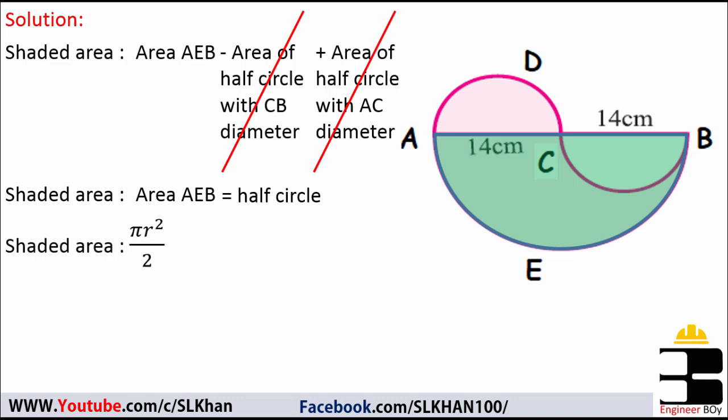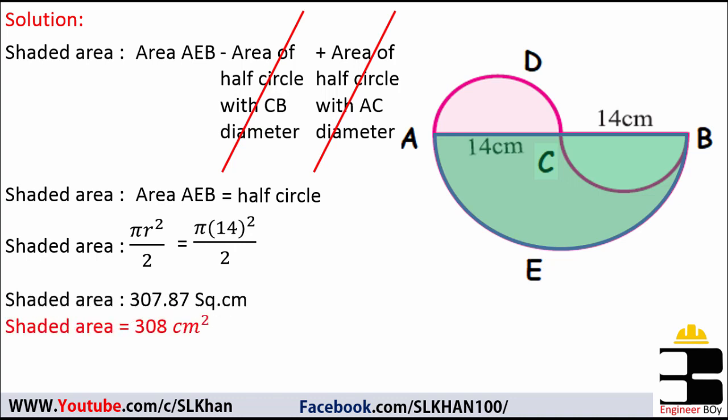Remember, the area of a half circle is π r² divided by 2, because π r² is the area of a full circle. Plugging in the radius of 14 centimeters, the shaded area equals π times 14 squared divided by 2, which gives 308 centimeters squared.